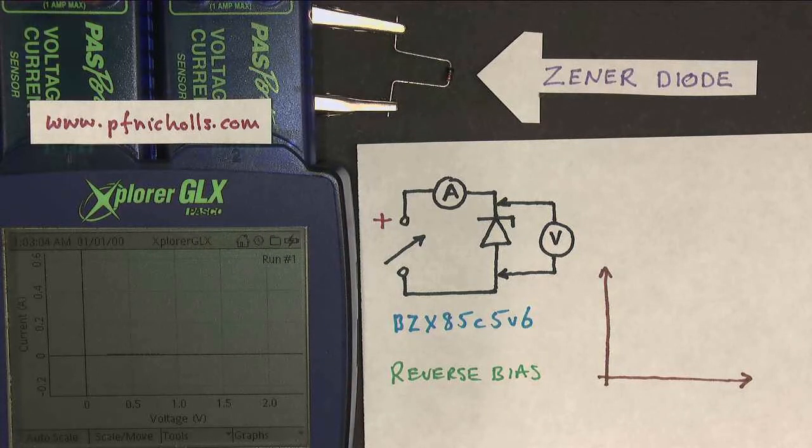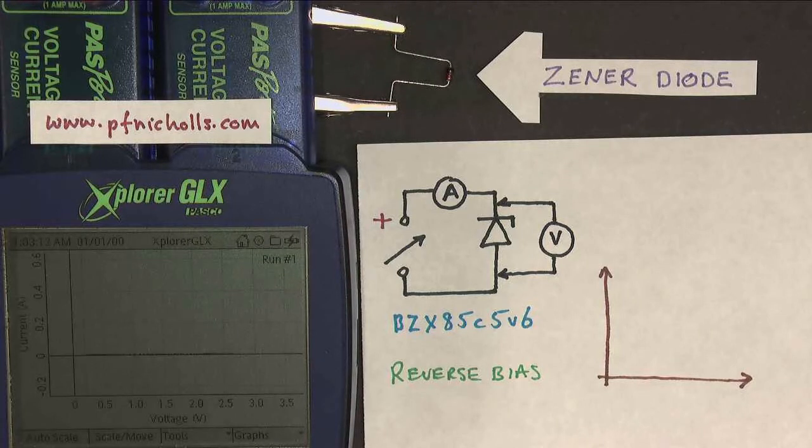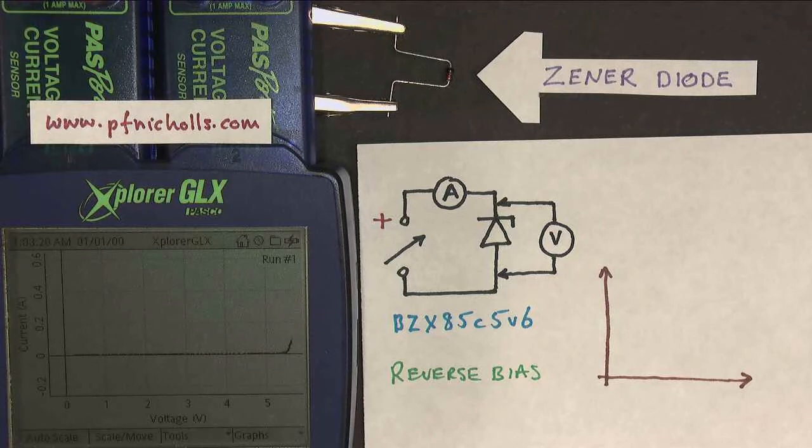I'm increasing my voltage, and I've already got to 1.5 volts, and there's no current flowing. I keep going to 2 volts, 3 volts, 4 volts, and when I get to 5 volts, I'm going to be quite careful here. We see what happens is that the Zener diode starts to conduct.